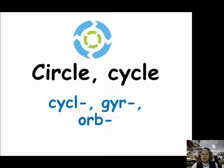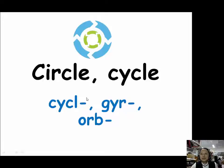Let's review what we just covered. For circle-shaped things or things going around in circles, we use the prefixes CYCL, GYR, and ORB.